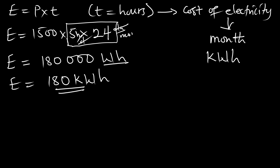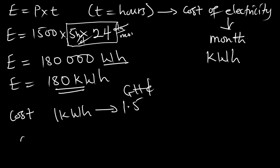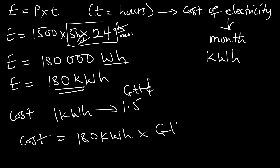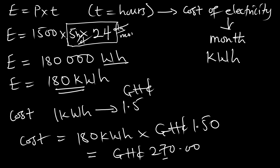This is the energy we are consuming for the electric iron in one month. The cost is 1.5 Ghana cedis per kilowatt-hour, meaning the total cost is 180 kilowatt-hours times 1.50 Ghana cedis, giving a total cost of 270.00 Ghana cedis. At the end of the month, the energy consumption by the iron is costing us 270 Ghana cedis.